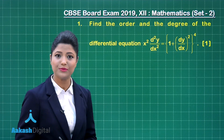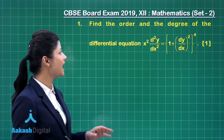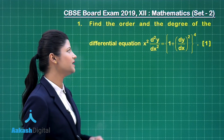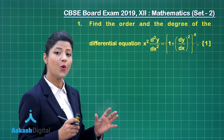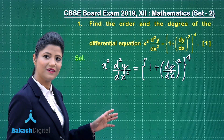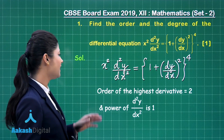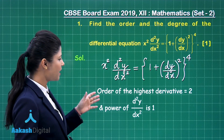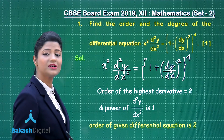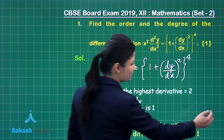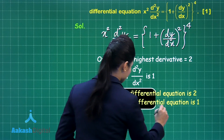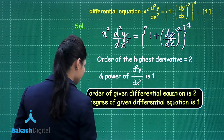This is a question related to the chapter of differential equations and it carries one mark. It states: find the order and degree of the differential equation x² (d²y/dx²) = (1 + dy/dx)^(4/2) whole raised to the power 4. You can clearly observe the highest derivative is d²y/dx². The order of the highest derivative is 2 and its power is 1. So the order of the given differential equation is 2 and the degree is 1.